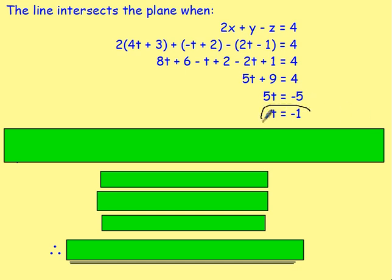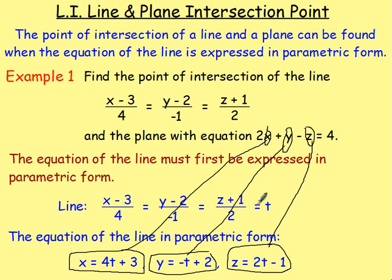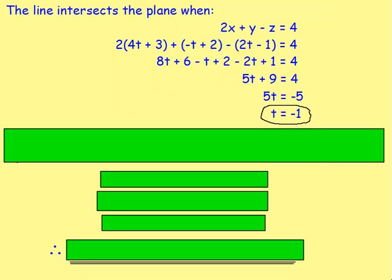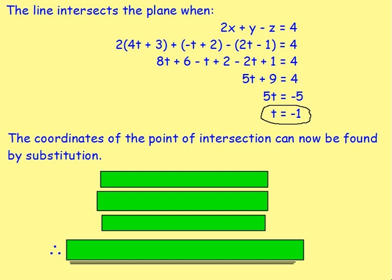If you know the value of t, well, going back to the last slide, we know that x = 4t + 3, but we've just found the value of t. We know y = -t + 2, and z = 2t - 1, and we know the value of t. So we can use substitution here, replacing the value of t in our equations in parametric form for x, y, and z.